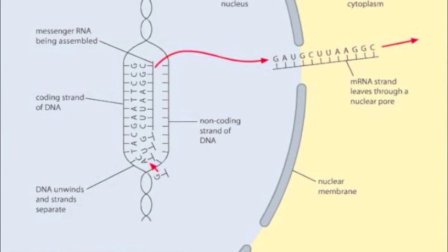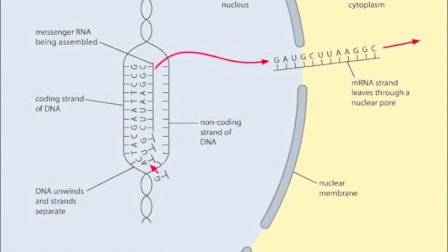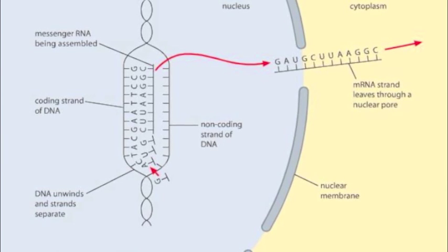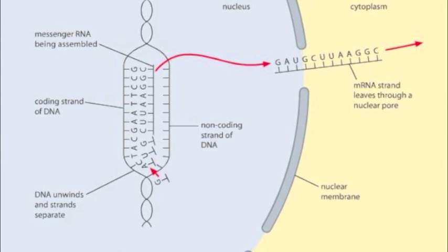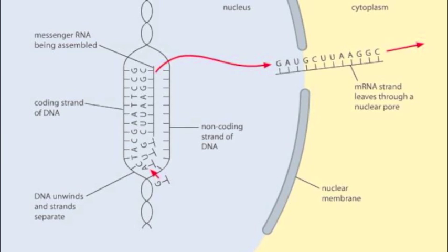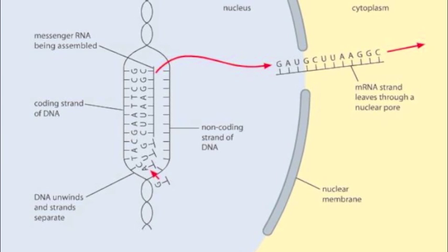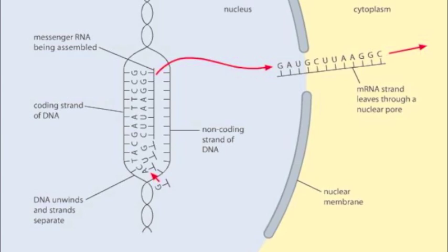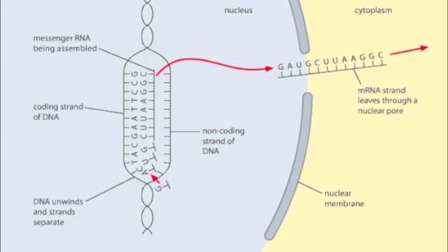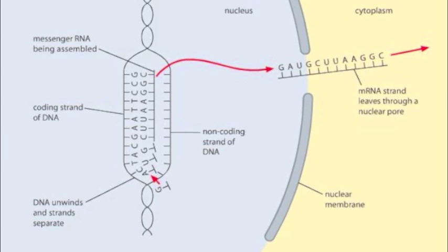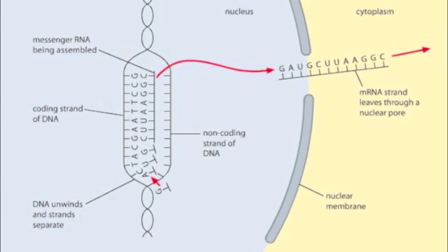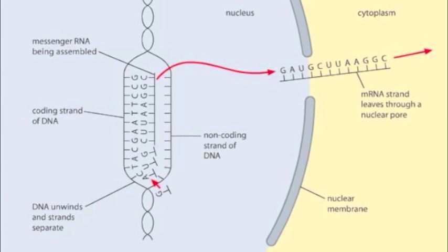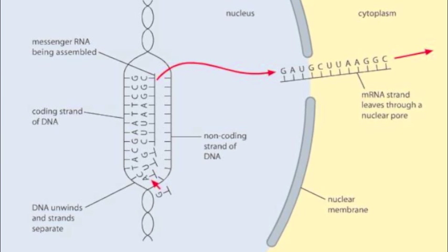Transcription starts when the DNA double helix unwinds and unzips, exposing the bases of the coding strand. An mRNA molecule then forms next to the DNA. Remember that in the DNA the bases are paired: A pairs with T and C pairs with G. The mRNA bases match up with the bases in the DNA in the same way.